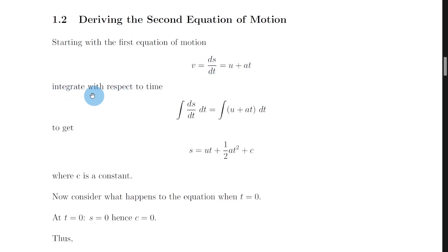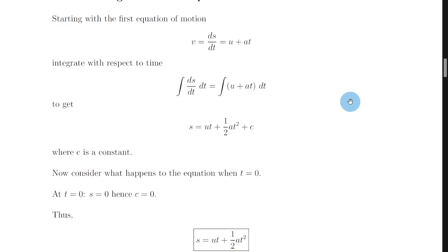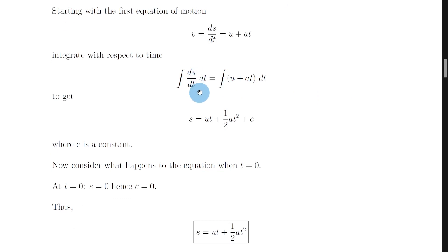And what we then want to do is integrate both sides with respect to time. So we have the integral of ds by dt dt is equal to the integral of u plus at dt where we need to integrate the whole of that right hand side so we've put it in brackets here just to make sure you're going to integrate both parts.